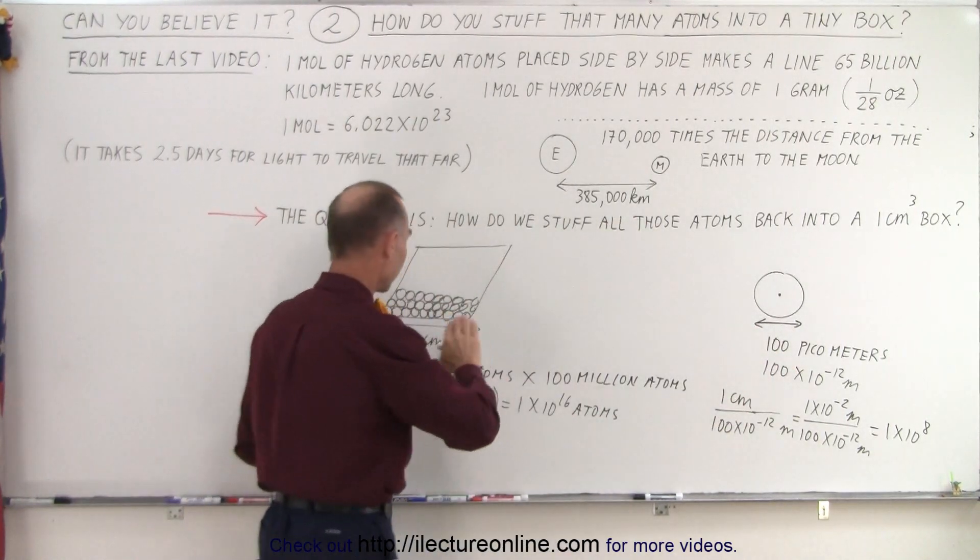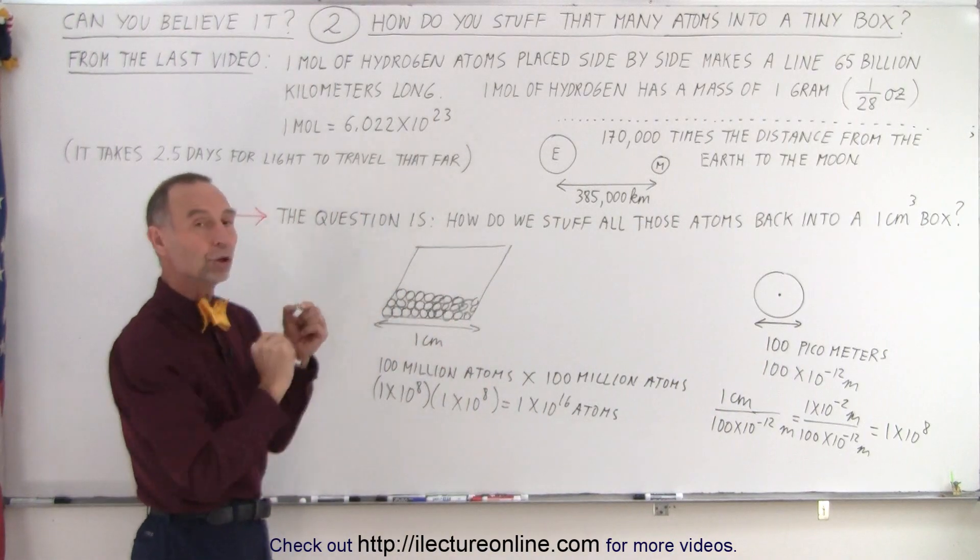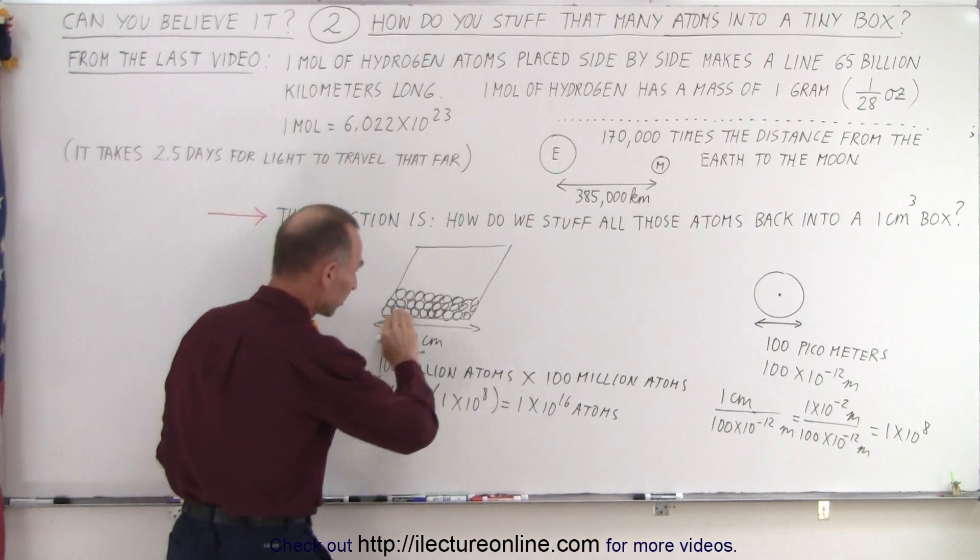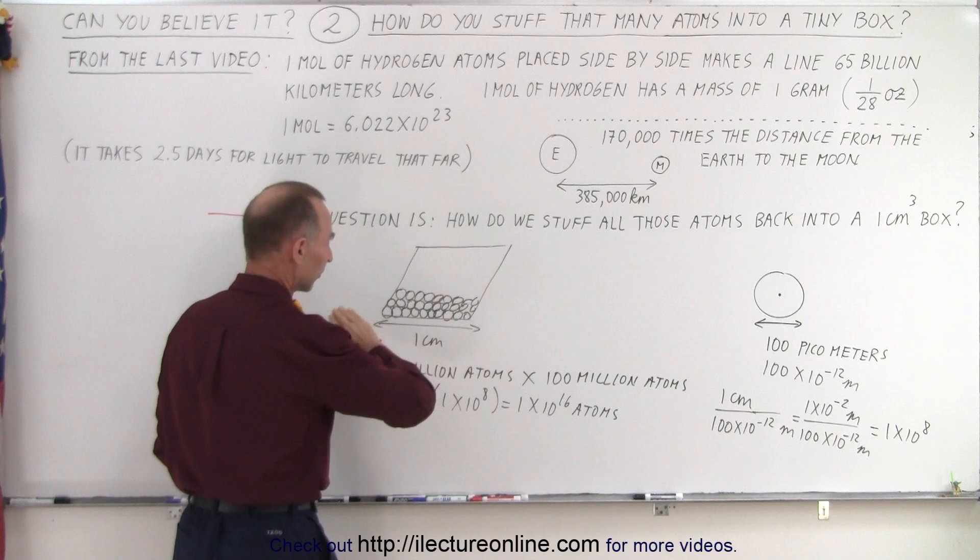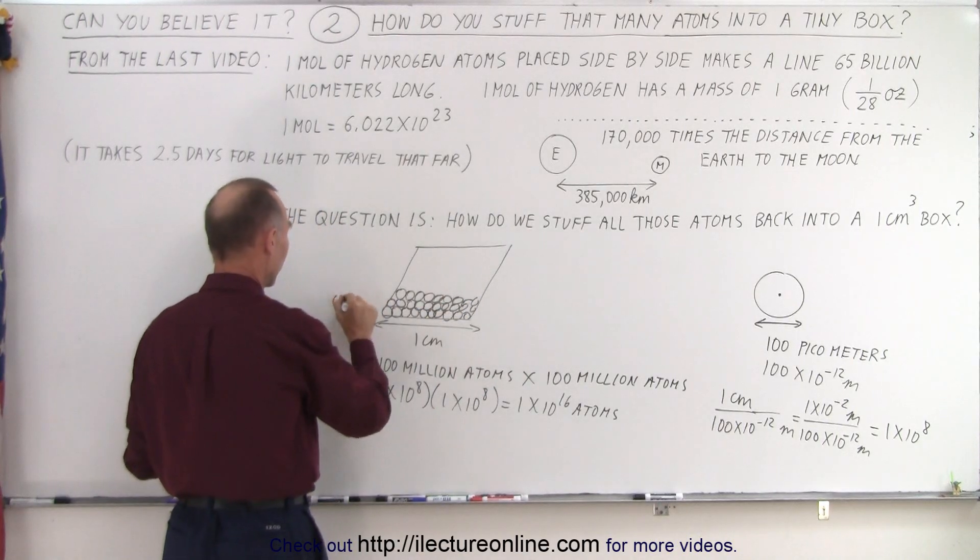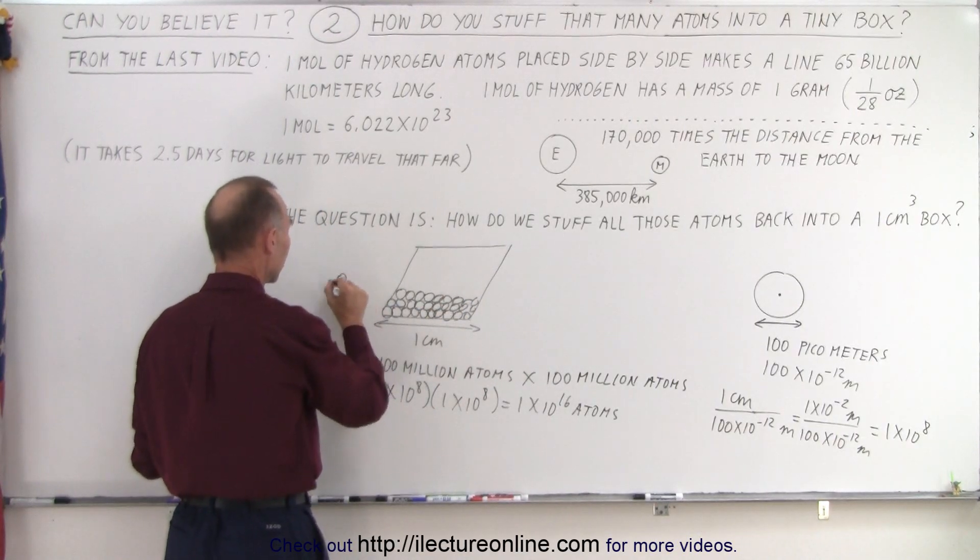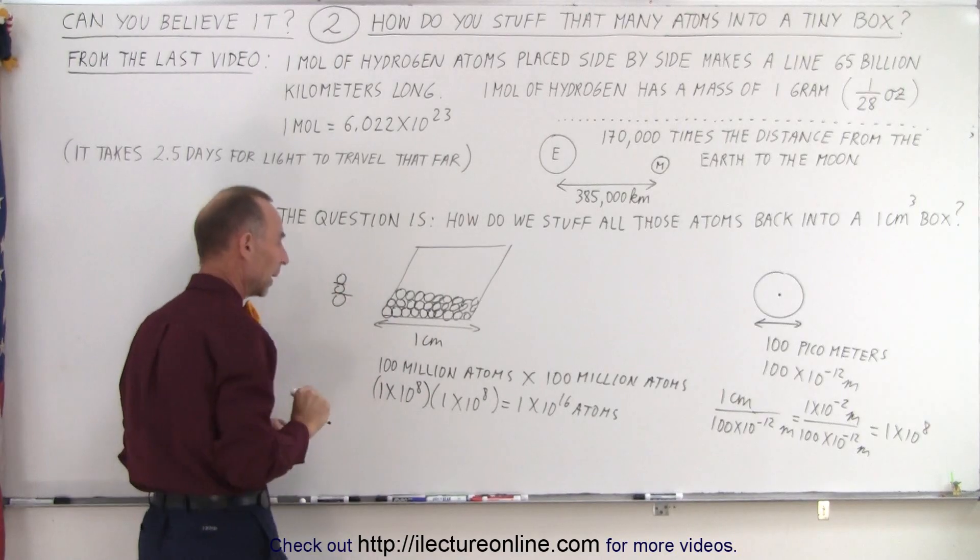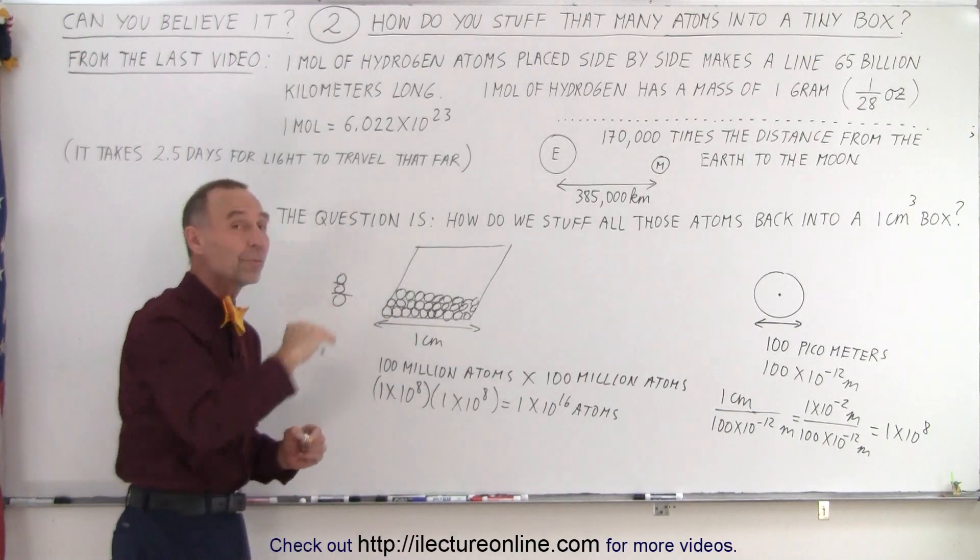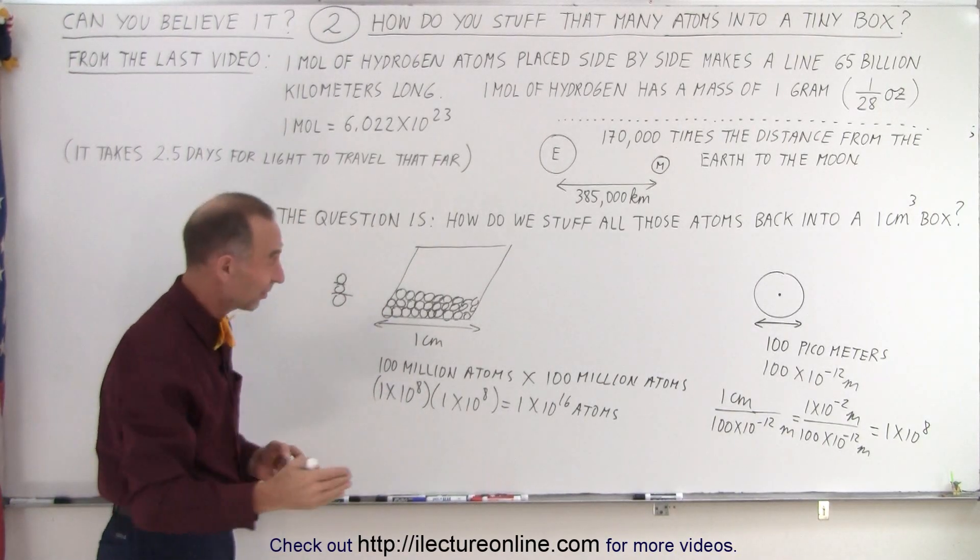Then you would do it again. You put in the second layer, the third layer, the fourth layer, and each layer, right on top of each other, would take 100 picometers of space. How many of those layers can you put in there? You guessed it: 100 million layers.